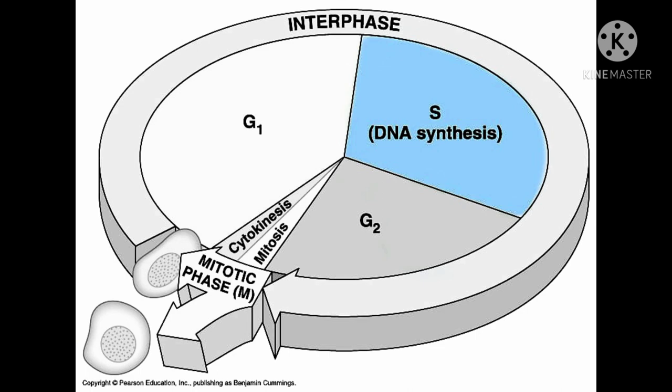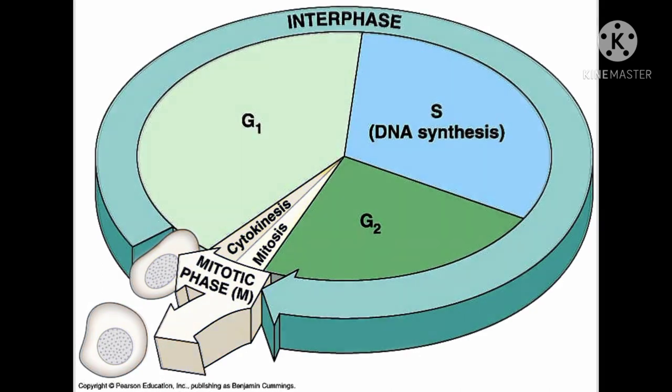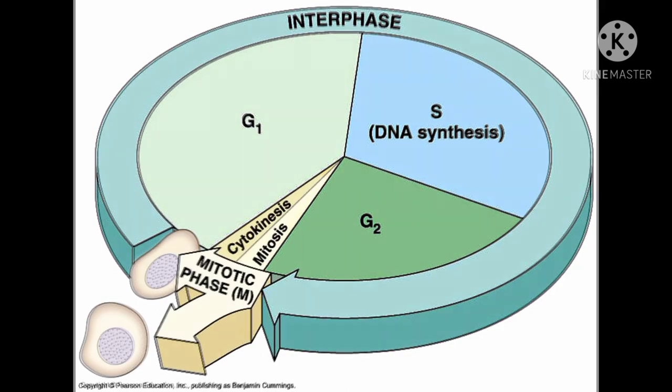After DNA replication, each chromosome consists of two identical sister chromatids. The centrosome replicates and gives two centrosomes in animal cells. At this stage, the cell has a well-defined nucleus. The nuclear membrane bounds the nucleus, which contains one or more nucleoli. DNA is loosely packed in long chromatin fibers.